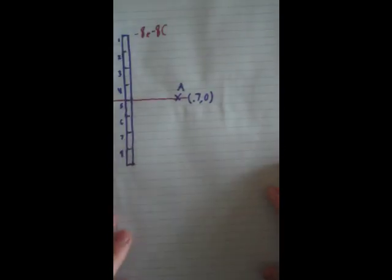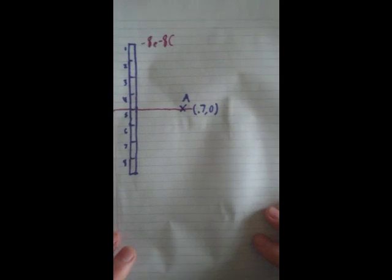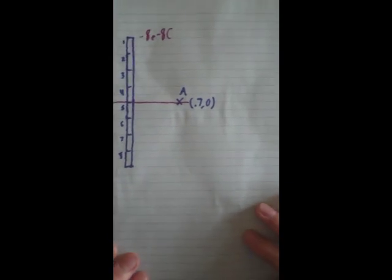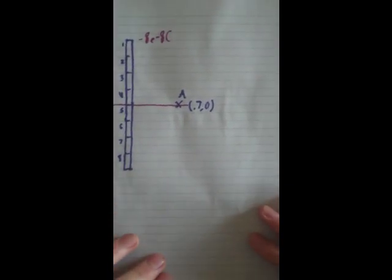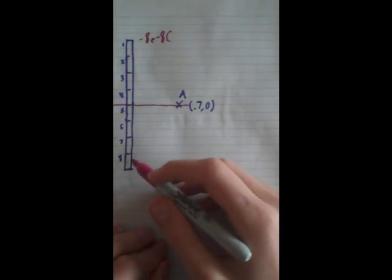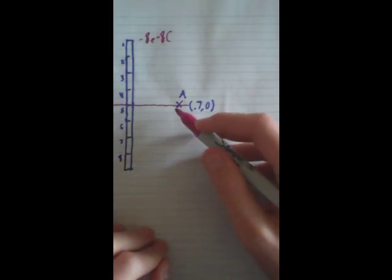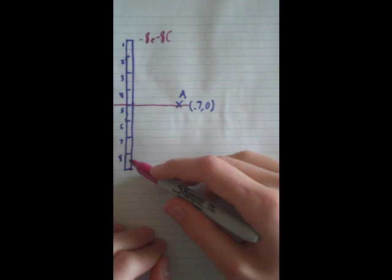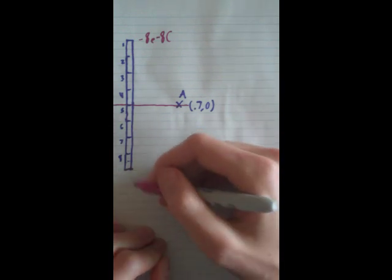Hey guys, this lesson's on finding the electric field at a point in space by a section of a rod using point charge. In this problem, we want to find the electric field at point A due to right here.